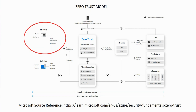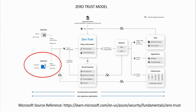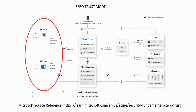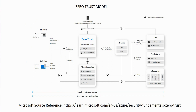You start with your identities — human and non-human — with strong authentication, and then also your endpoints. Your endpoints are your different devices: that could be a desktop, laptop, tablet, smartphone, or whatever it may be. Whether it's users or devices, they are authenticating to a directory service such as Azure AD.